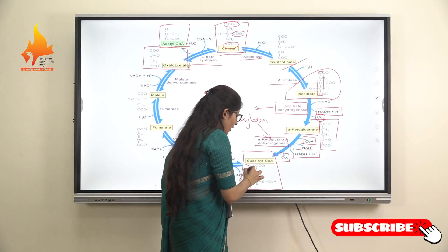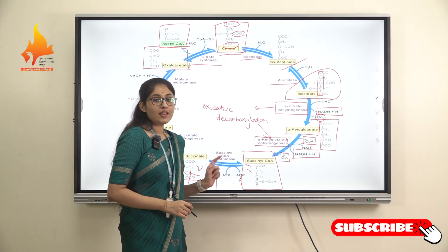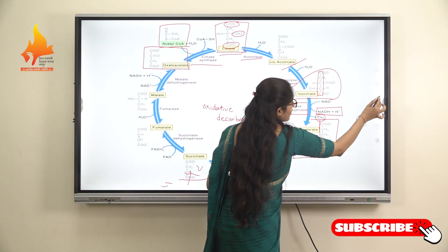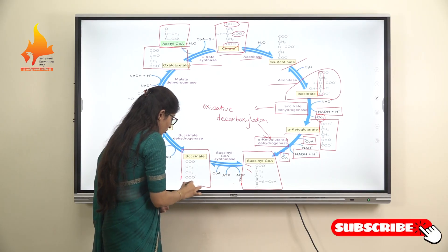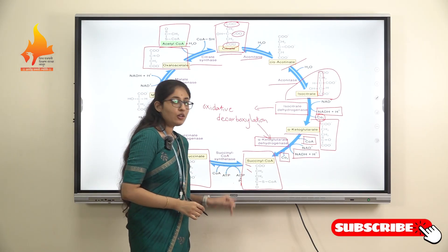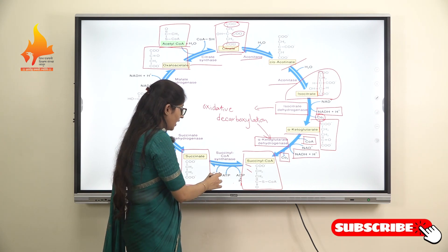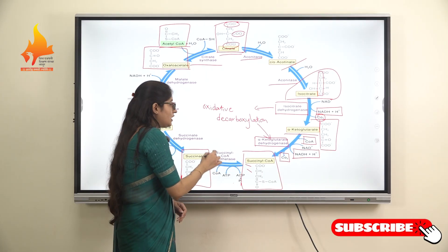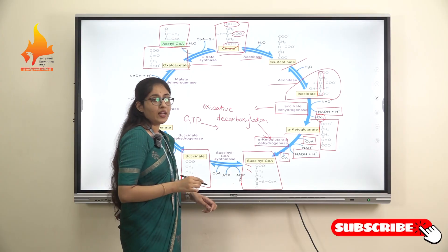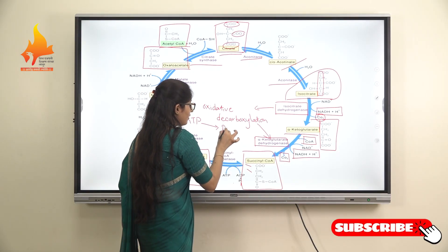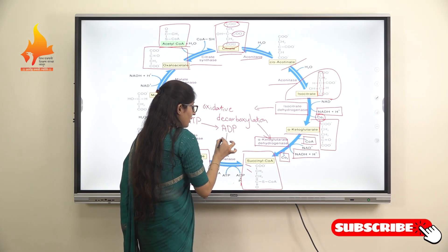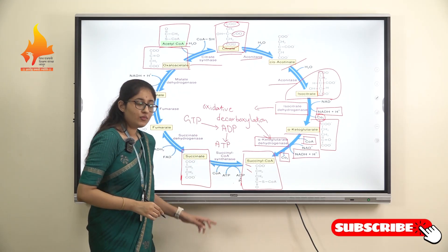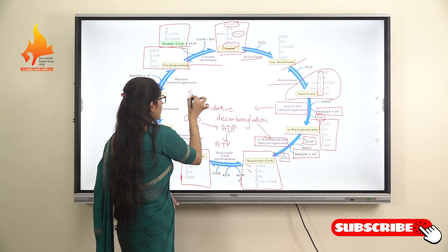The succinyl-CoA which is synthesized is then further cleaved and there is formation of succinate. To carry out this reaction, the succinyl-CoA synthetase enzyme is utilized. During this reaction, there is generation of GTP. GTP donates its phosphate group to ADP, from which ATP is synthesized. So here, substrate-level phosphorylation occurs.